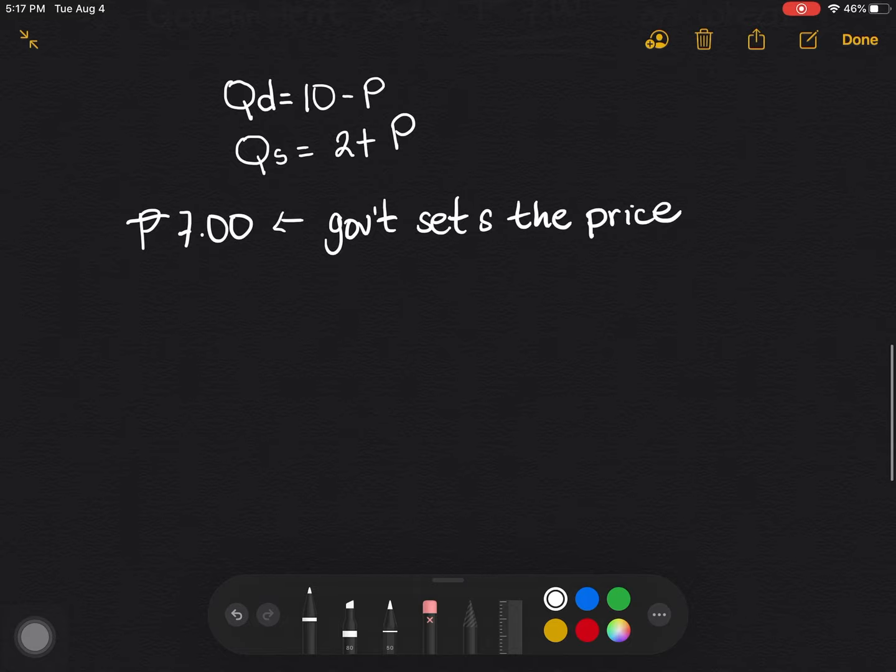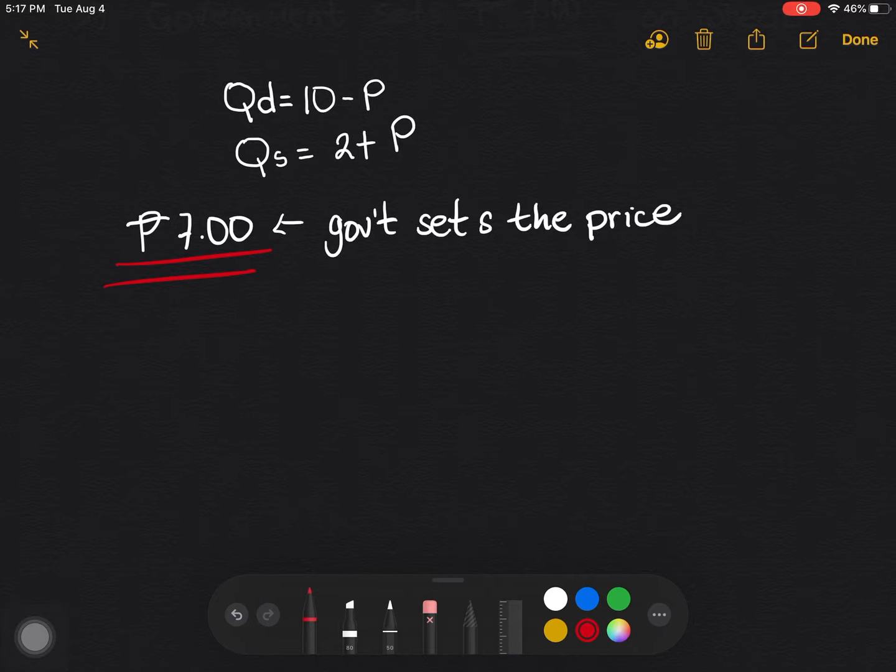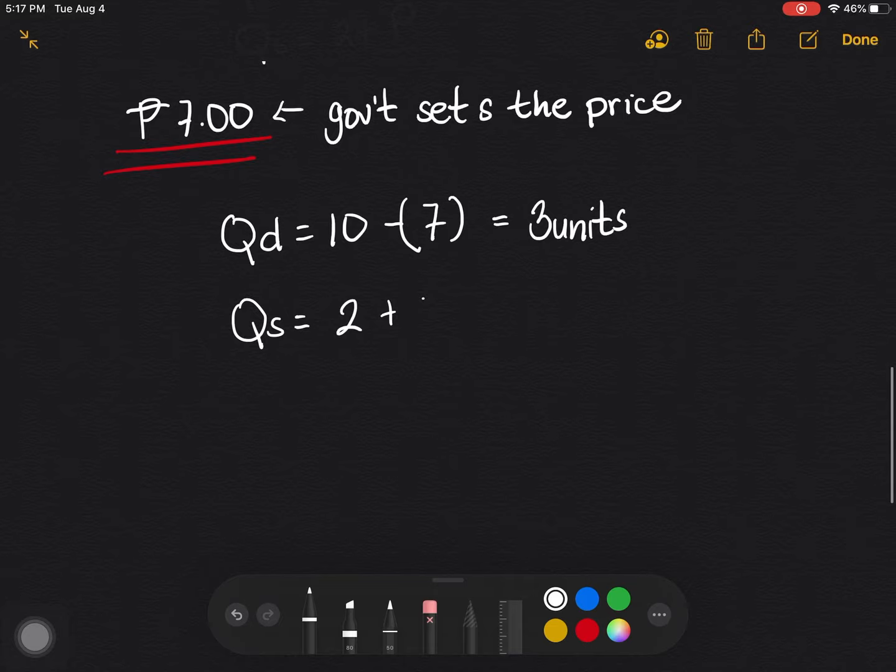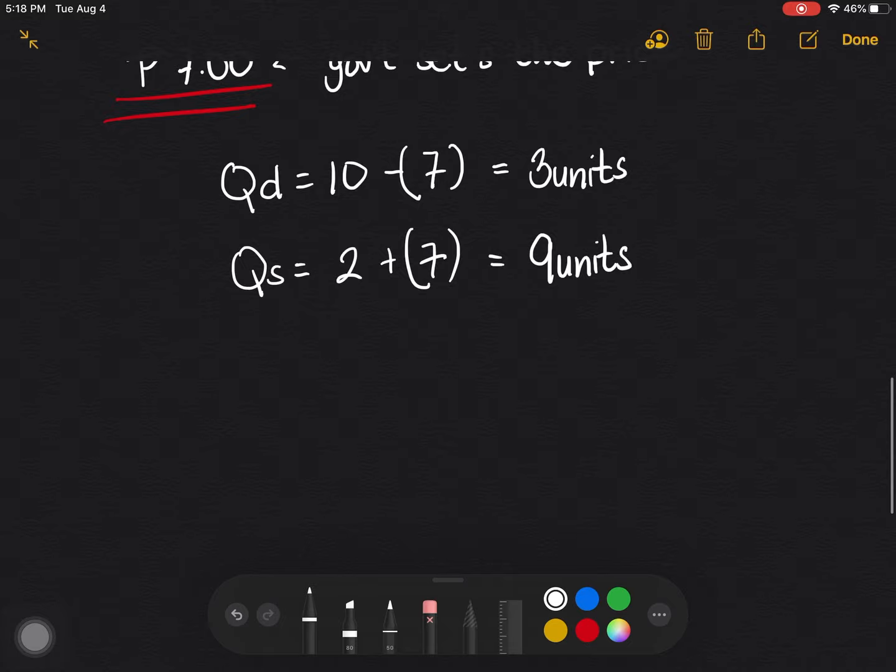So in that case, what we're going to do is just substitute this 7 pesos to the P that we have. So QD is 10, supposed to be P, but because the P is 7 pesos as set by government, we'll just put there 7, and that is 3 units. And QS, it's 2 plus 7, because 7 is the set price by the government, that will be 9 units.